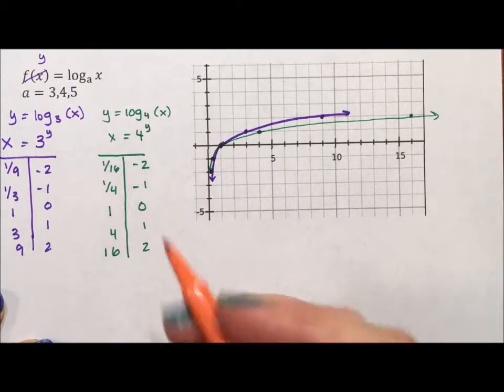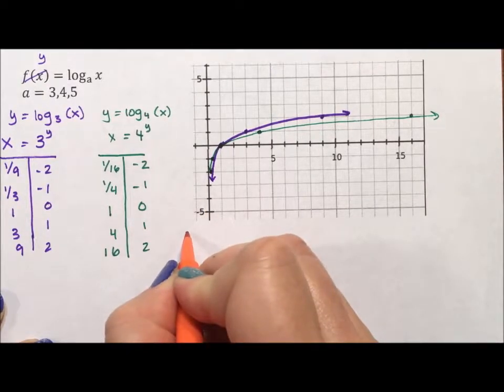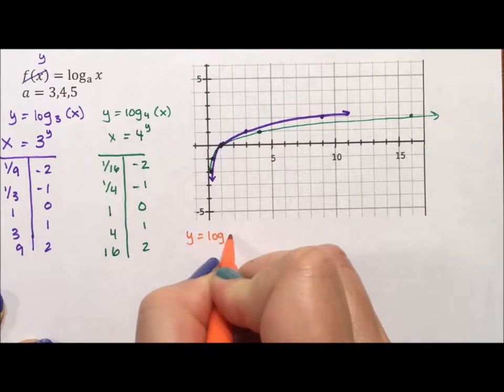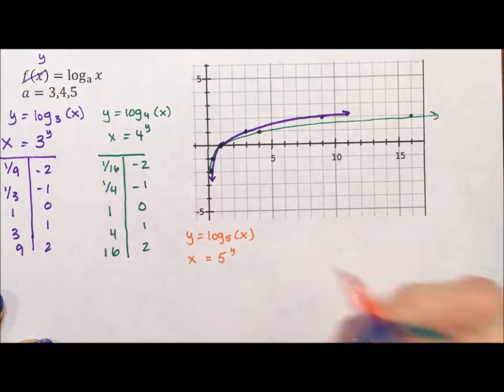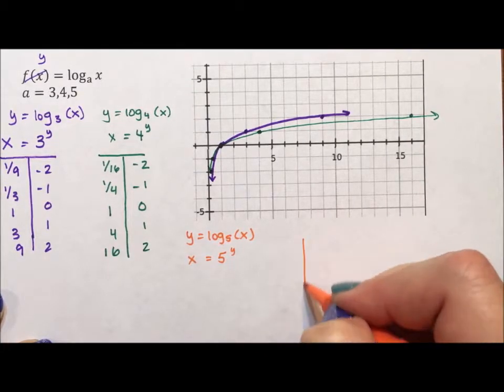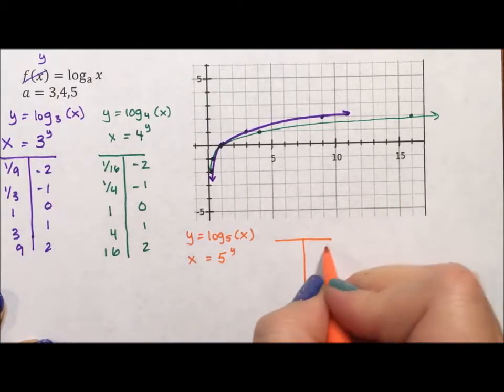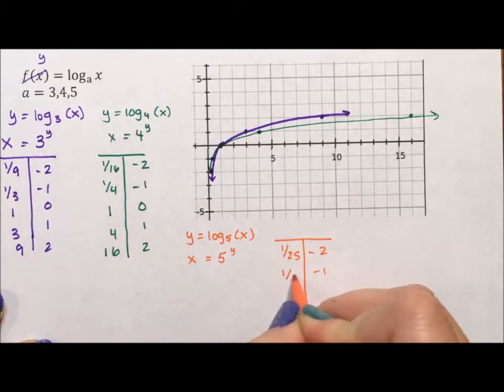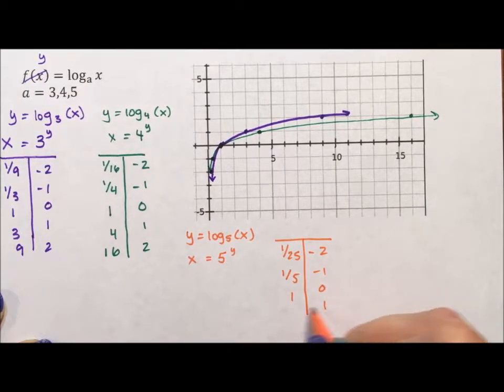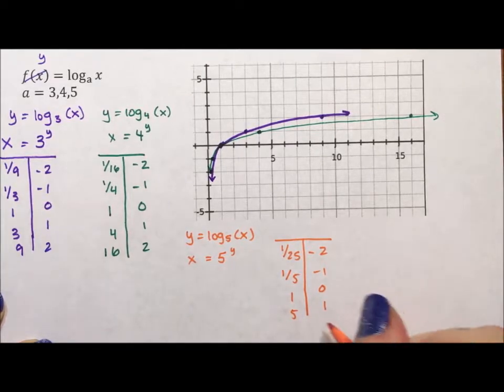All right, for our last one we have y equals log base 5 of x. This is asking the question 5 to what power equals x? So if we do our table of values again, negative 2 is 1 over 25, negative 1 is 1 fifth, 0 is 1, 1 is 5, and 2 is 25.